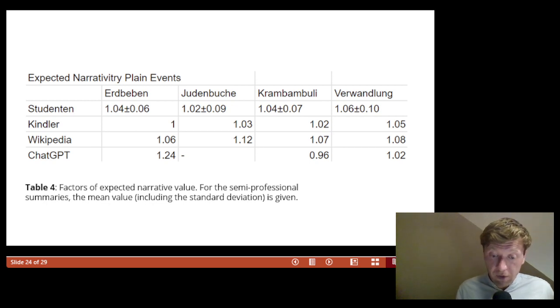A value more than 1.0, on the other hand, means that passages referenced in the summary have more narrativity than passages not referenced.